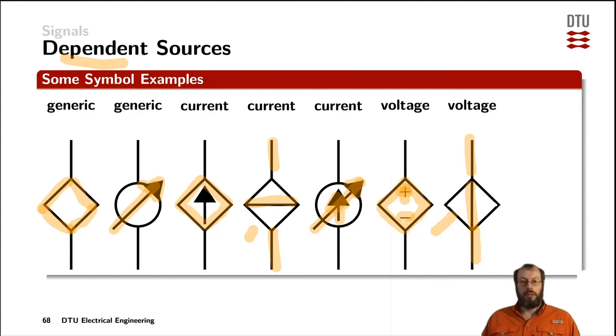Now the parameter a dependent source is depending on could be either another electrical signal like a voltage or a current, or it could be any other physical parameter. For example, it could be the amount of photons hitting a surface as in the case of a photovoltaic cell, a solar cell. Then you would put the solar irradiation as the controlling parameter. Or it could be, for example, the temperature. Then you would put a factor like theta here. And you can write that right next to the arrow or right next to the square, which signal the source is actually depending on.